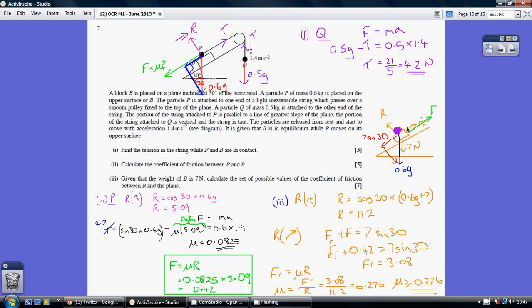So these two frictions in this direction together equals 7 sin 30. We know that the friction between the particle and the block is 0.42. That allows us to work out the friction between the block and the slope is 3.08.